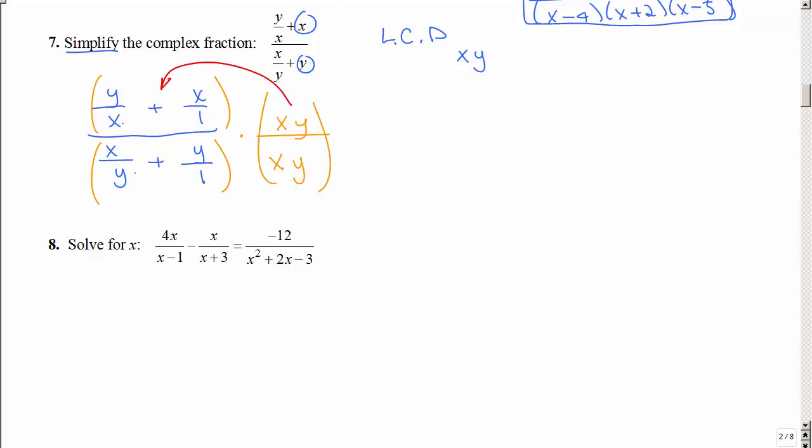So I'm going to distribute it to the top and bottom. So I'm going to have y over x times xy over 1 plus x over 1 times xy over 1. Then x over y times xy plus y over 1 times xy. I know that looks really ugly, but what I'm trying to do is get rid of all those four fractions and just get it down to one ugly fraction.